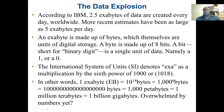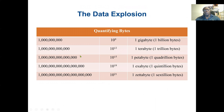We can see that an exabyte is a very huge amount of data. To quantify bytes: one gigabyte is 10^9, a terabyte is 10^12, a petabyte is 10^15, an exabyte is 10^18, and zettabytes — which will be common in a few years — are 10^21.